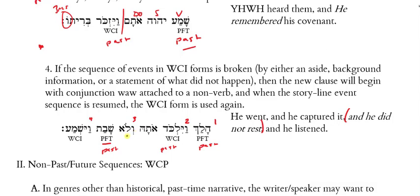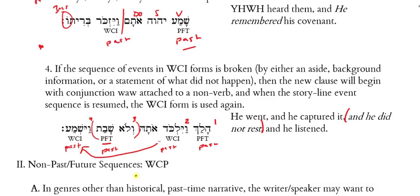The break is marked by a vav not attached to a verb but to the negative particle, switching back to the perfect. Then when I want to resume what did happen, vayishma — I've gone back to a WCI form. These earlier forms are all past, but they're not sequential. Actually, these two are sequential to each other — 'this didn't happen' — and then the sequence picks up again with the WCI.